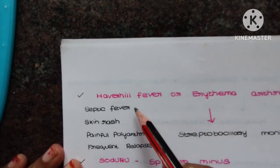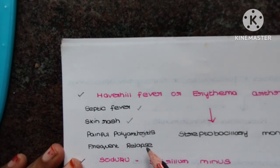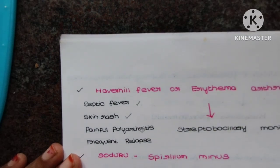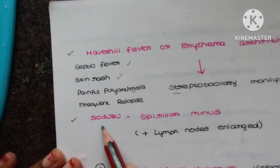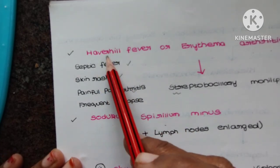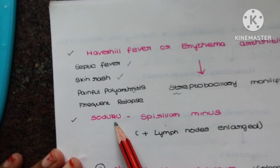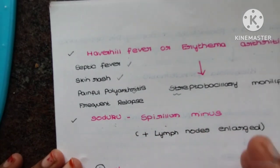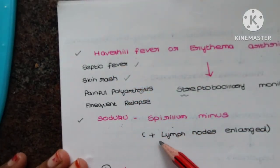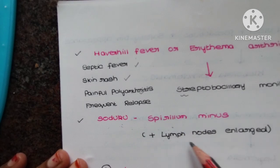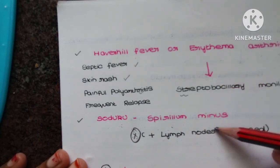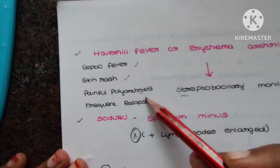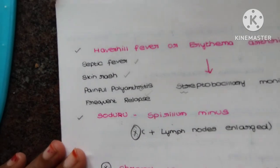Next: Haverhill fever or erythema arthriticum. The patient presents with septic fever, skin rashes, painful polyarthritis, and frequent relapses — an on-and-off patient coming to hospital for treatment. The organism is Streptobacillus moniliformis. Another disease called Sodoku is caused by Spirillum minus. The differentiating feature between these two is lymph node enlargement: no lymph node enlargement in Haverhill fever, but lymph node enlargement is present in Sodoku.